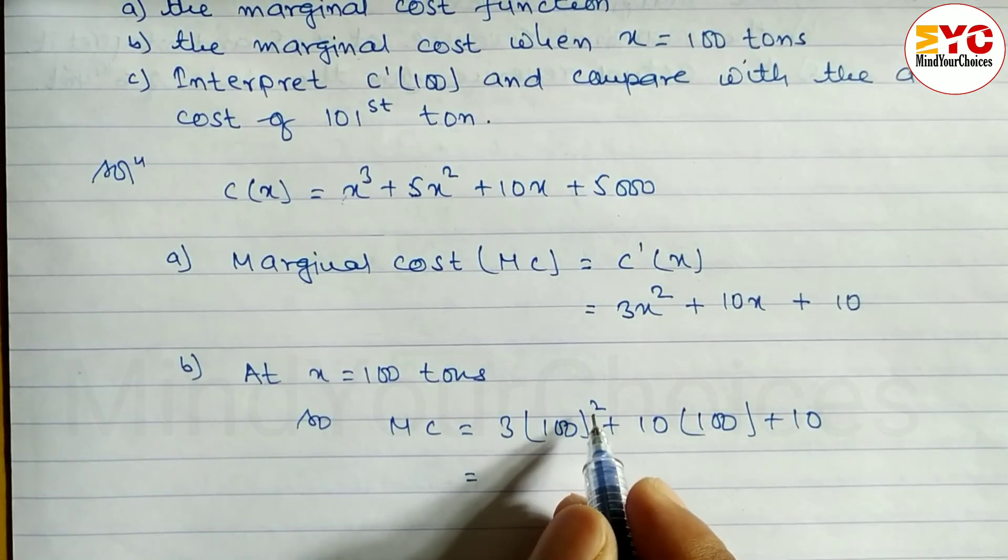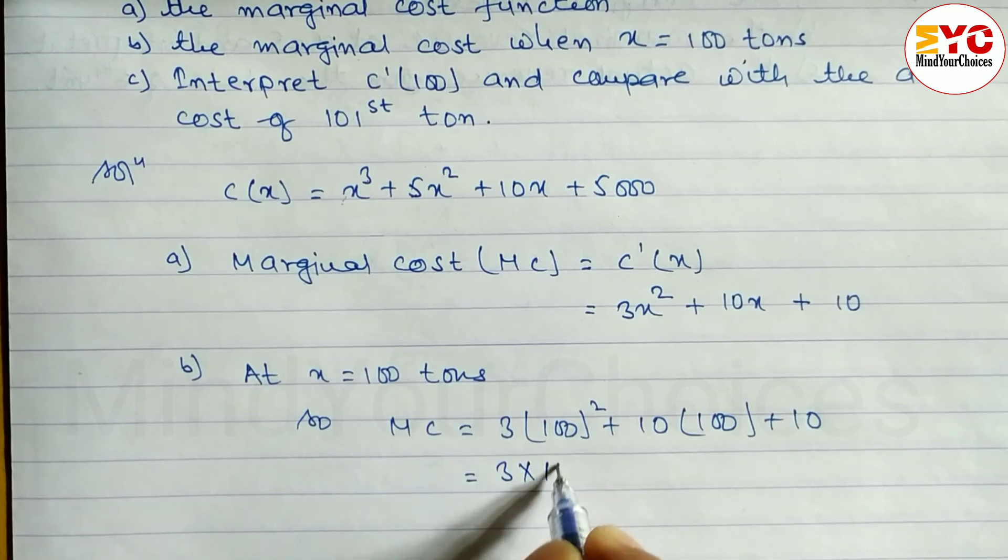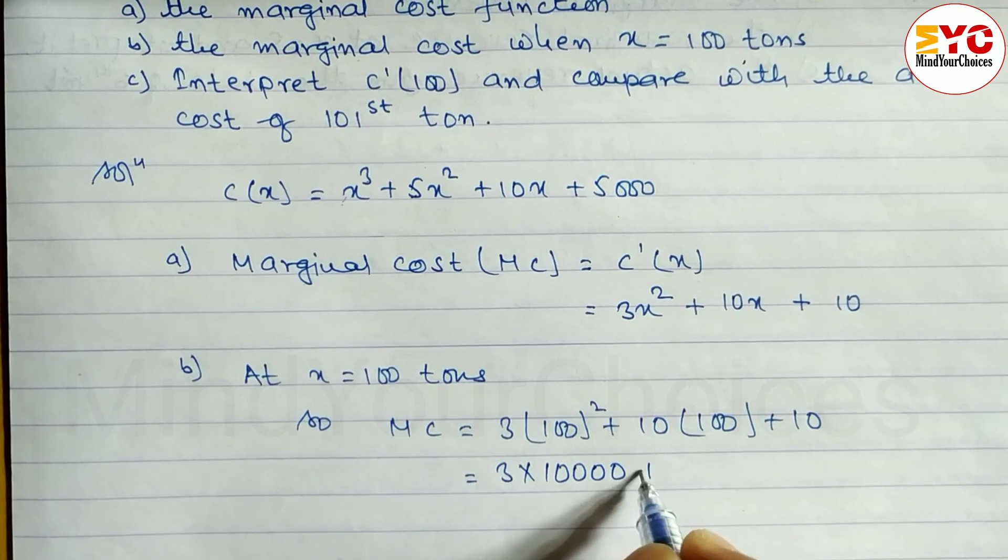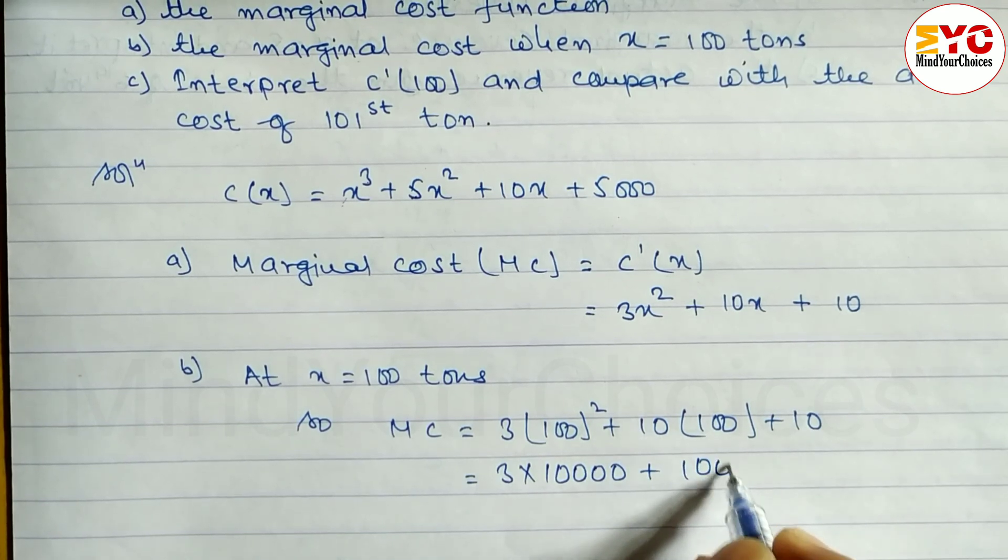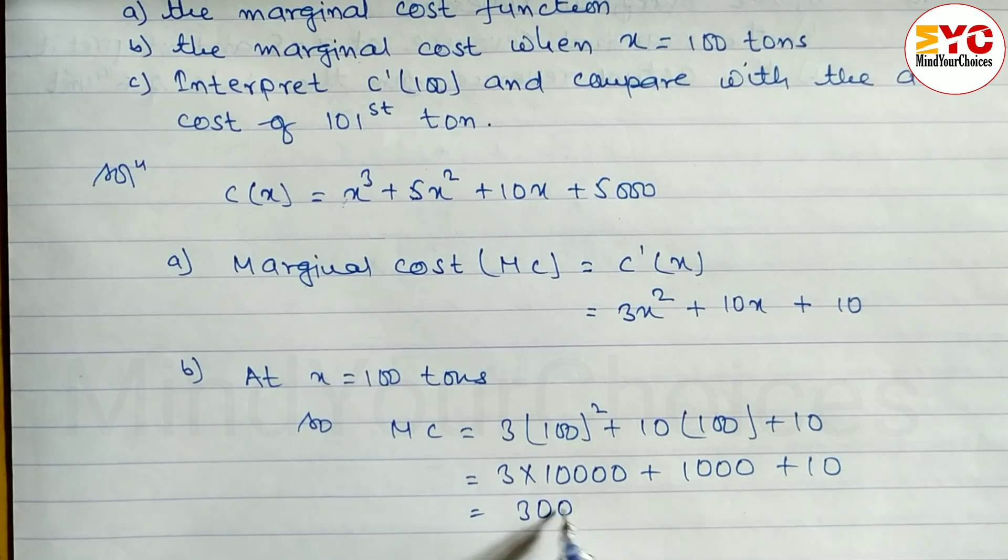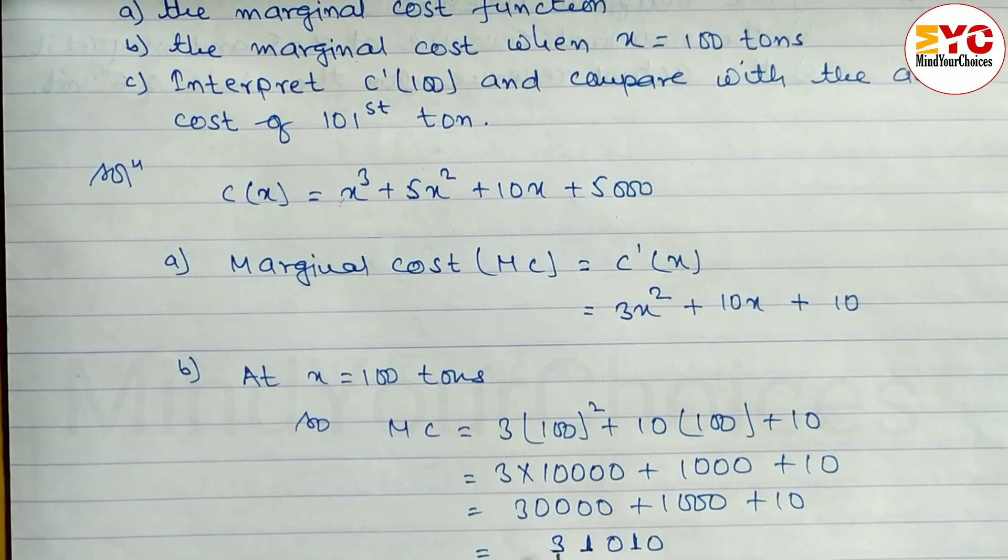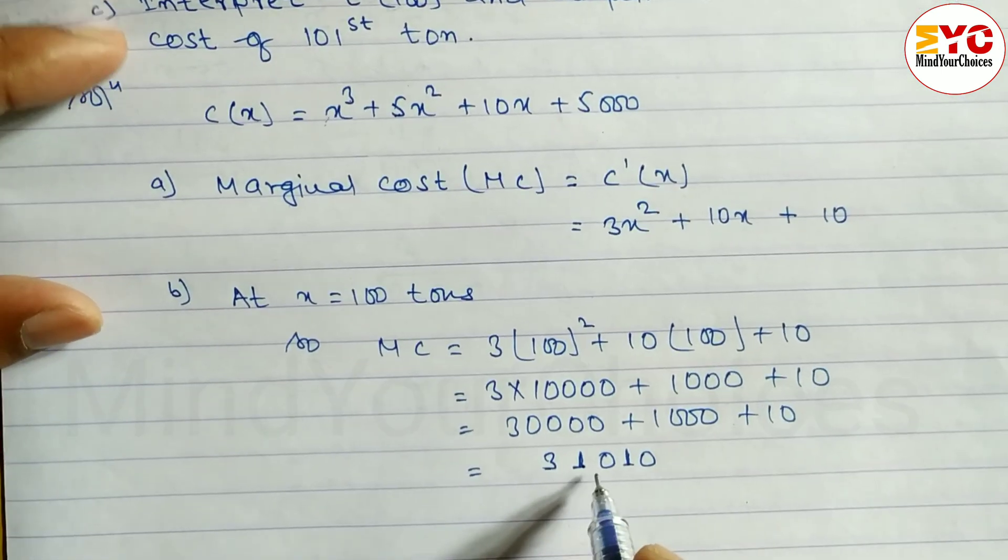100² is 10,000 times 3, so we get 30,000 plus 1000 plus 10. Now just add: 31,010.